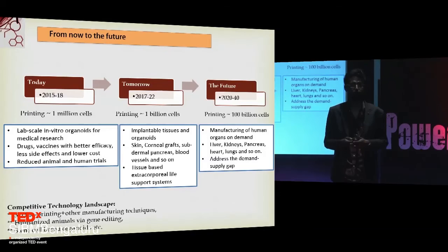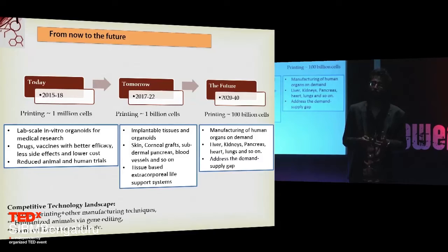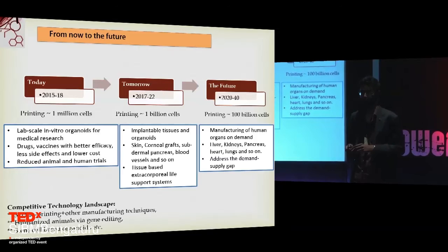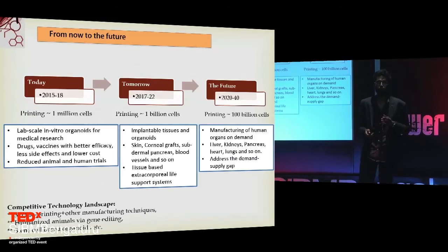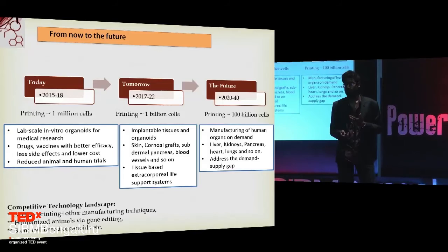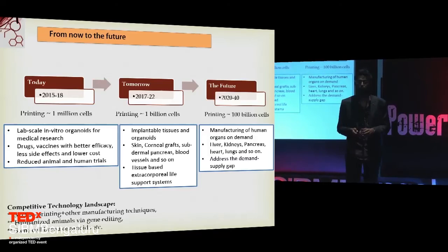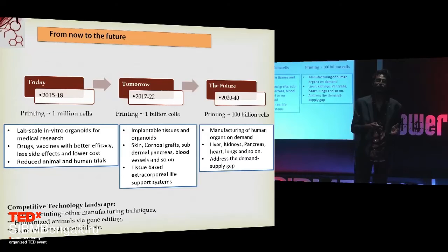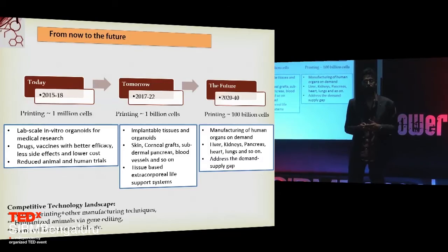It's not just us — across the world, you would have heard of people working on 3D bioprinting. A lot is happening. Right now, people are making tissues and small organoids for medical research — for the development of affordable drugs and vaccines with fewer human and animal trials. Tomorrow, people will be looking at manufacturing smaller and simpler organs or tissues like skin, the human cornea, even subdermal pancreas. This kind of bioprinting and tissue engineering is also useful for developing extracorporeal life support systems — for example, if you have liver failure, you need an external liver outside until you get a transplant.